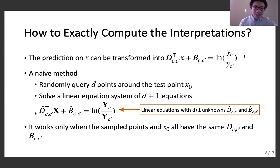Here is a naive method. We can first randomly query d points around the test point, and then we can solve a linear equation system of d plus 1 equations, which is built by the sampled points and the test point. Since the points are uniformly sampled, the equation system will have a solution with probability 1. Let's denote the solution by d hat c' and b hat cc'. If d hat cc' is always equal to the ground truth decision feature, then well done.